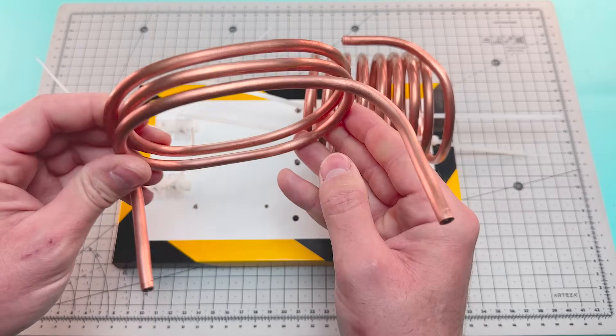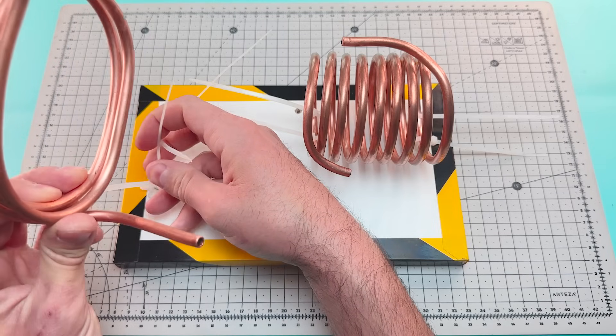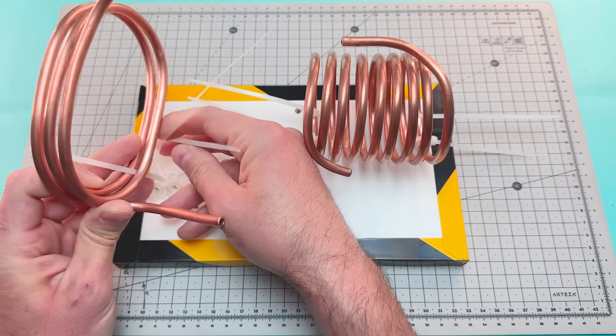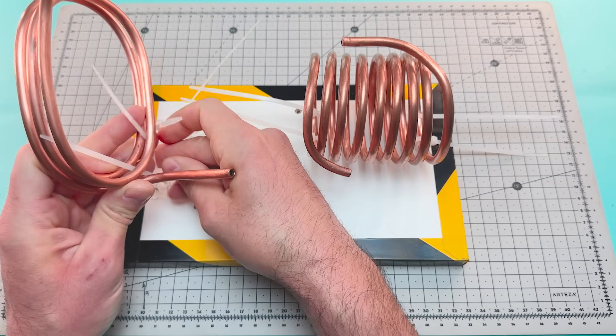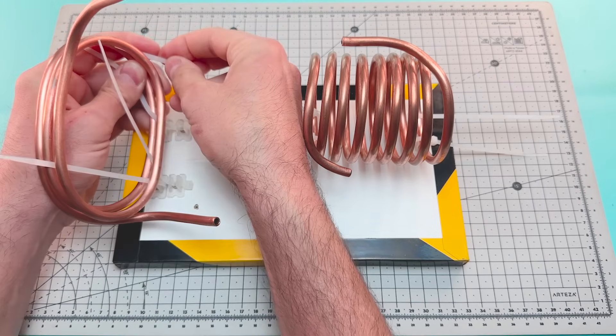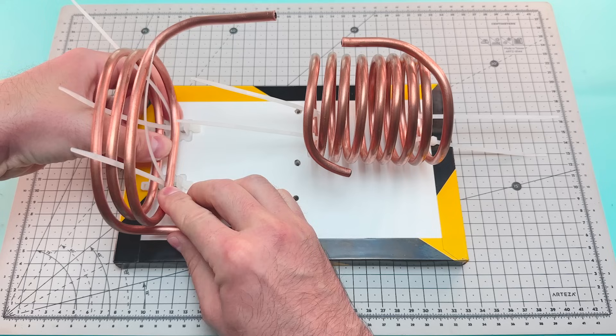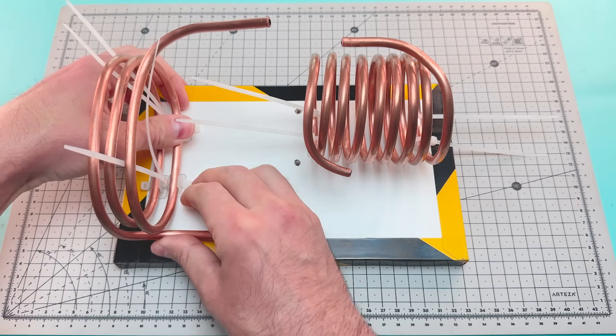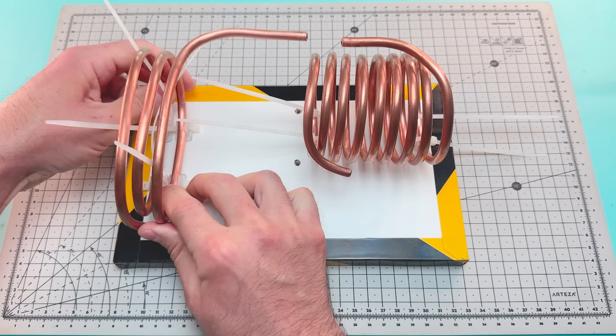There it is. Now we're going to secure the condenser. Pay attention to how the inlet and outlet tubes are oriented.